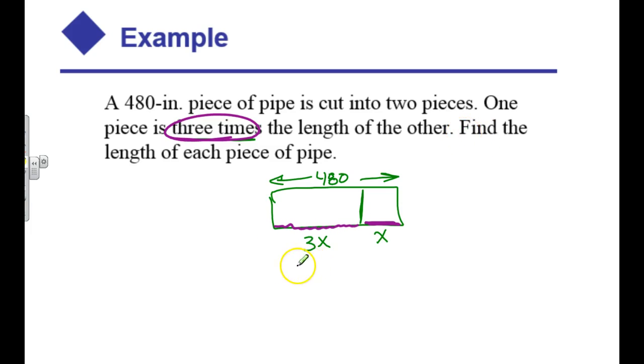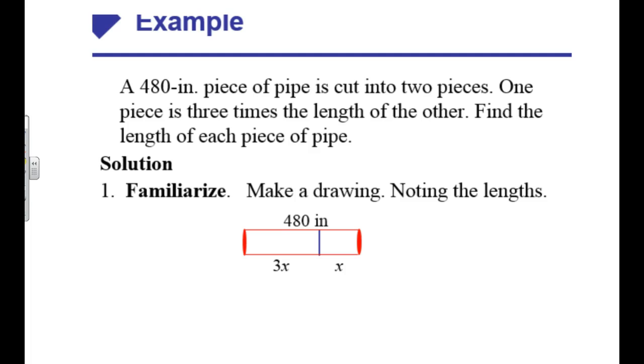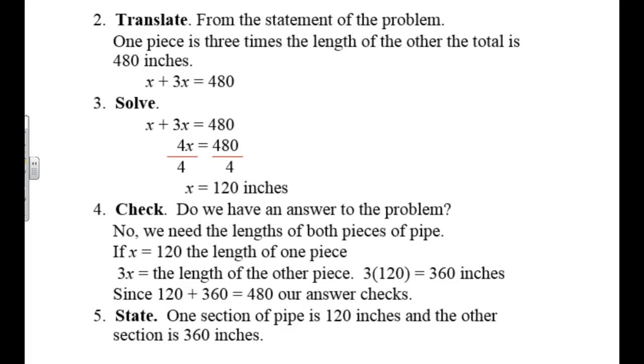Well, I know that this total distance is 3x plus x, and we'll set that equal to 480. And so this is 4x equals 480. And x will turn out to be 120. So then you want to go back and check that answer. So here's your check, and then state the answer, 360 inches. So the answer is going to be with some units.